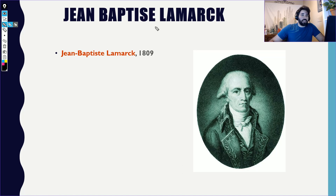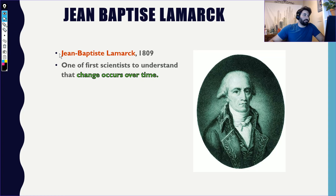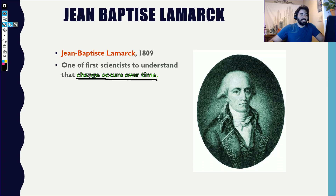The next person who came up with an idea is Lamarck. In 1809, Lamarck understood and explained that change happens over time — and not just over time, but slowly over time. That's really what evolution is. If you tell me evolution is change over time, or that living things change slowly over time, that's the core idea that Lamarck came up with.